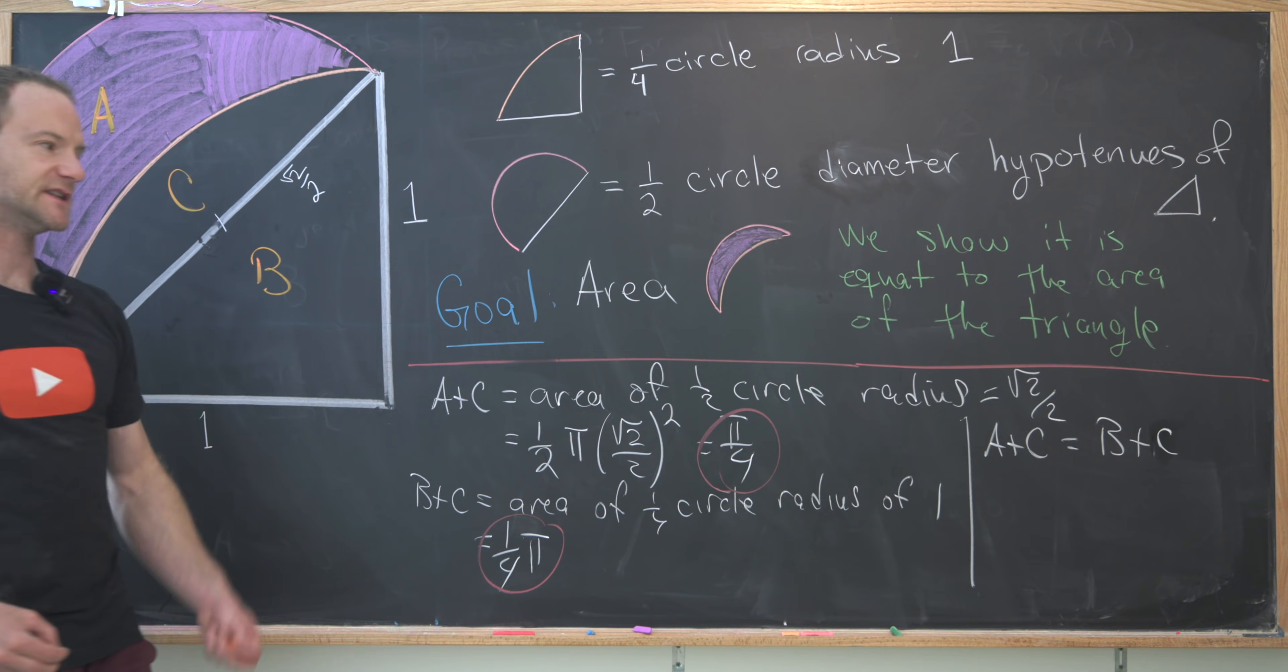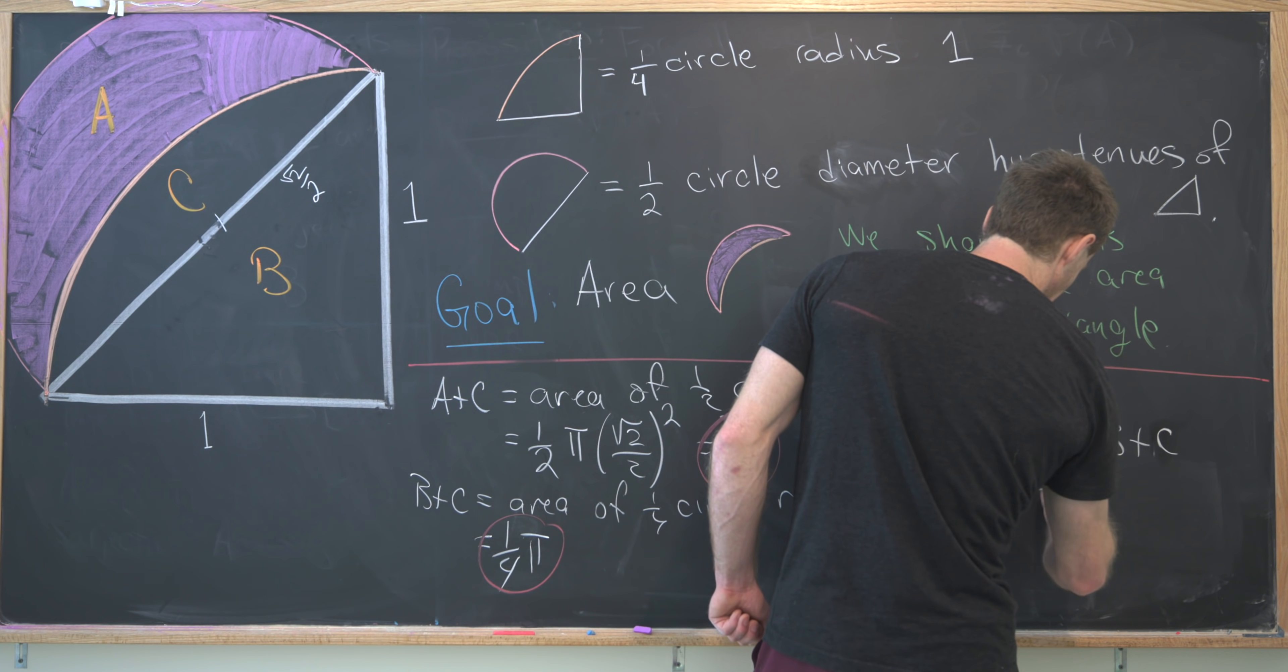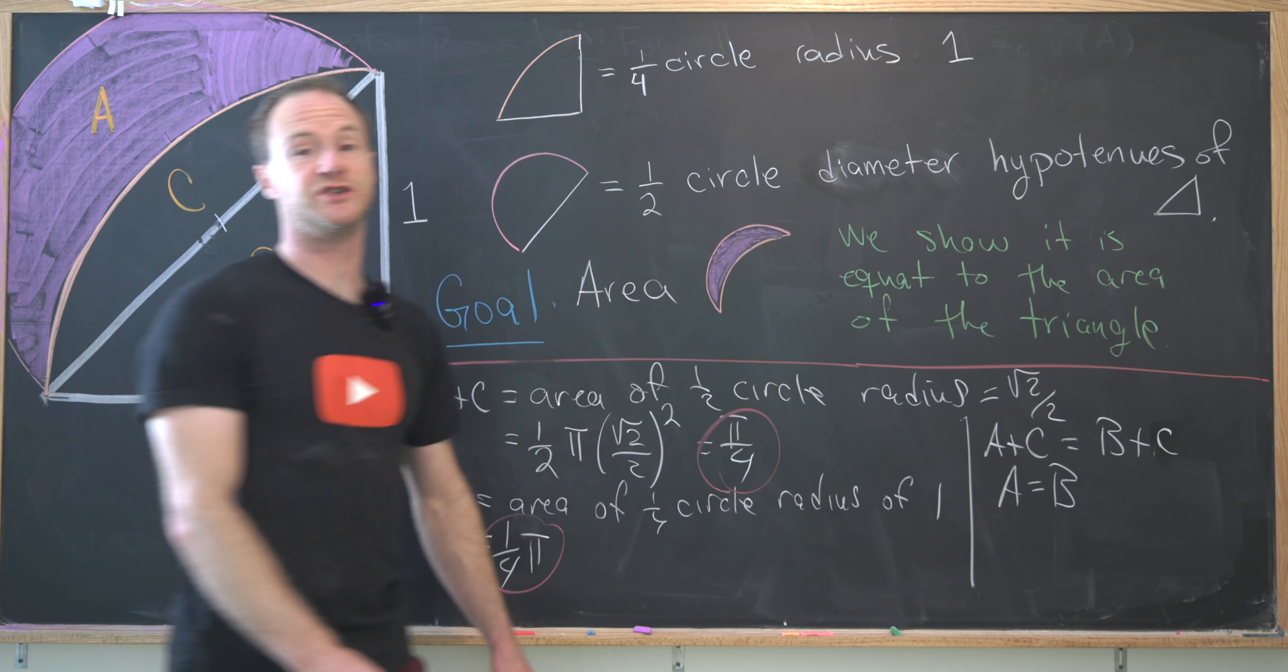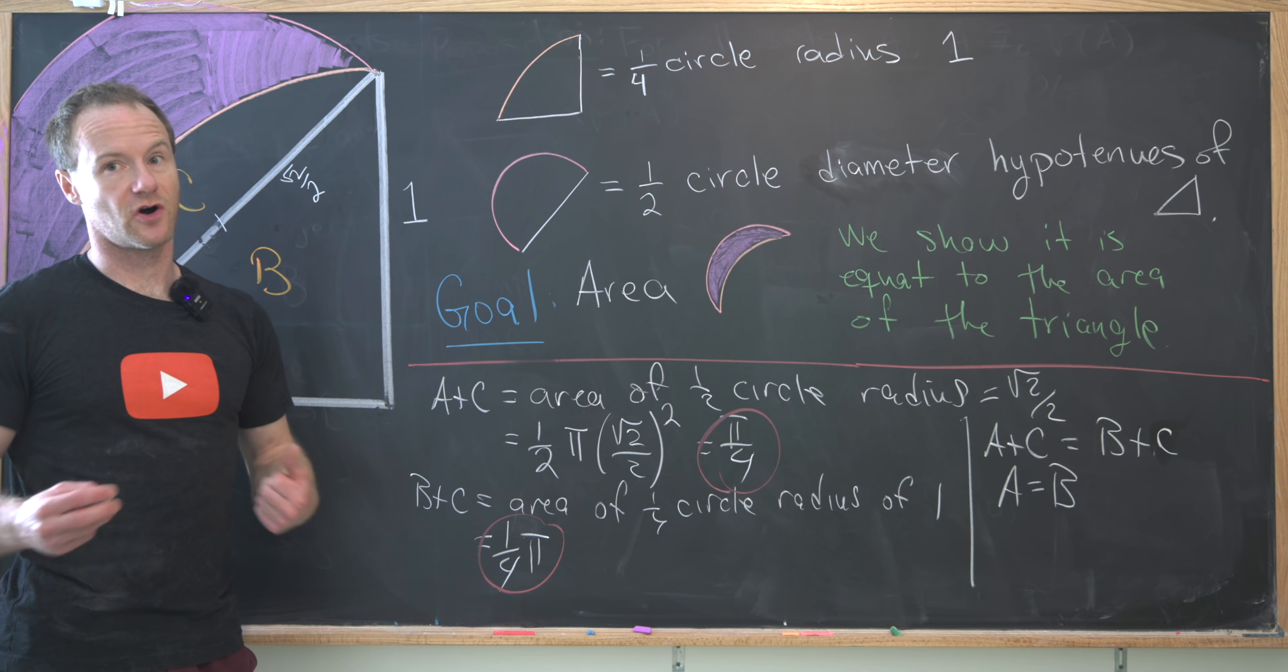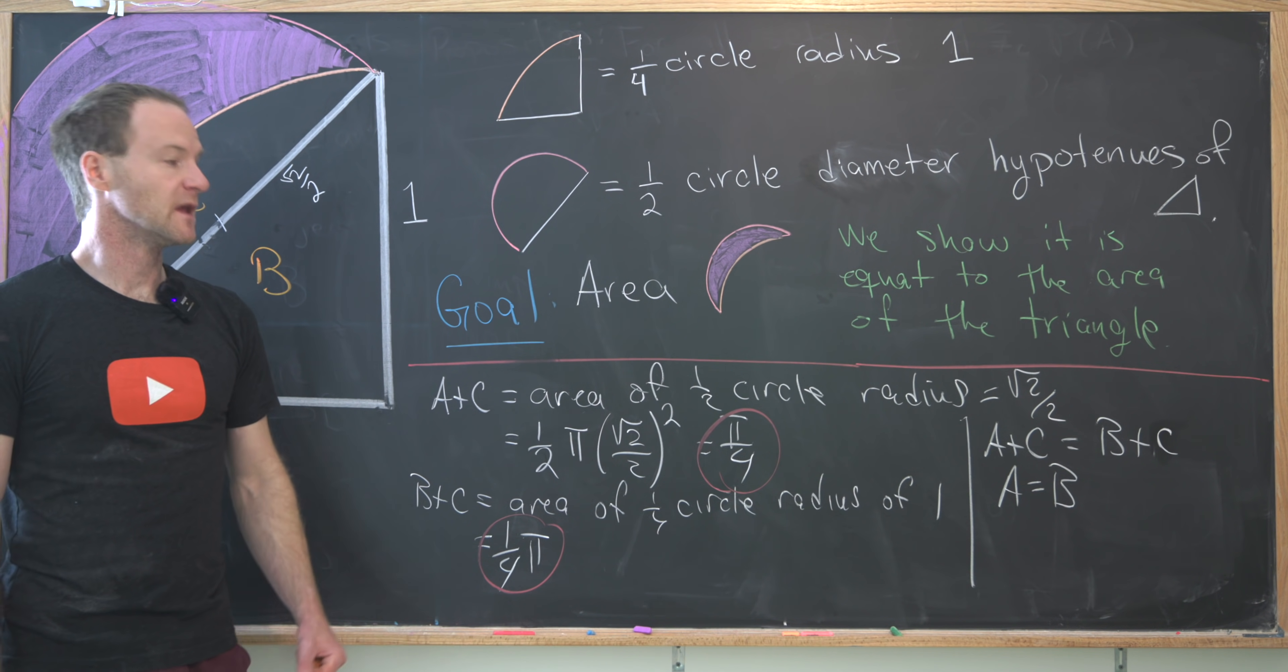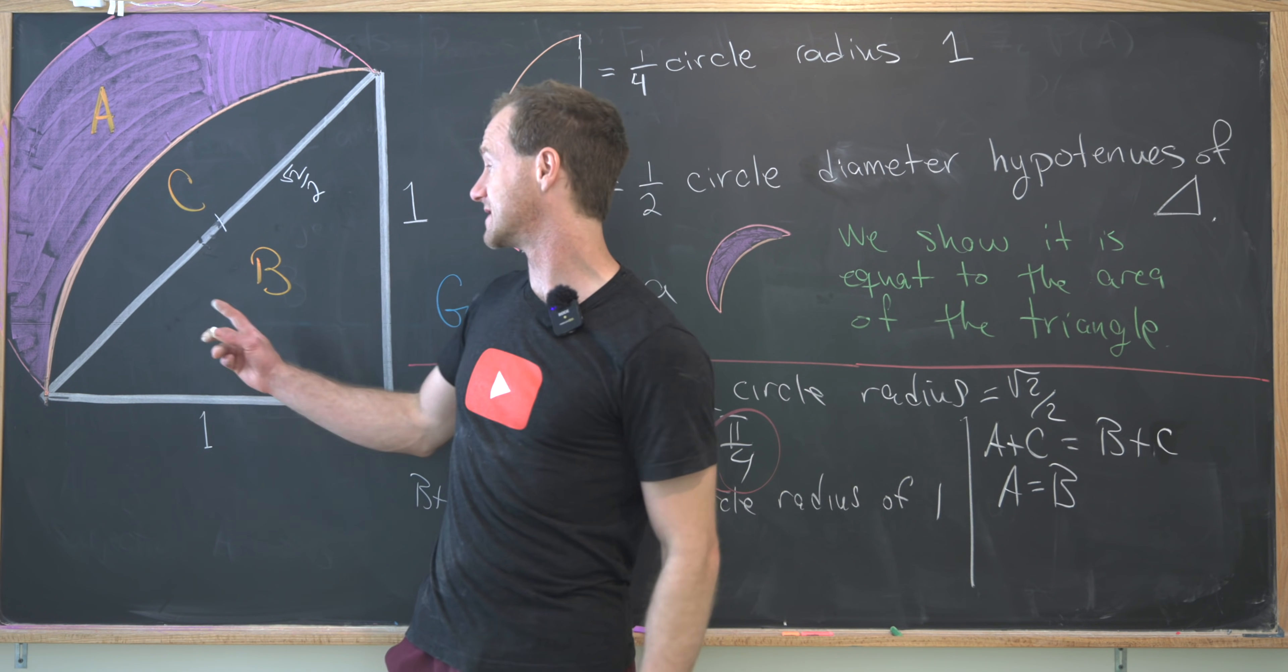But now if A plus C is B plus C, that clearly means that the area of region A is equal to the area of region B. But notice that the area of region A is kind of our goal area, which is hard to calculate on its own. But the area of region B is fairly easy to calculate on its own because it's a triangle.